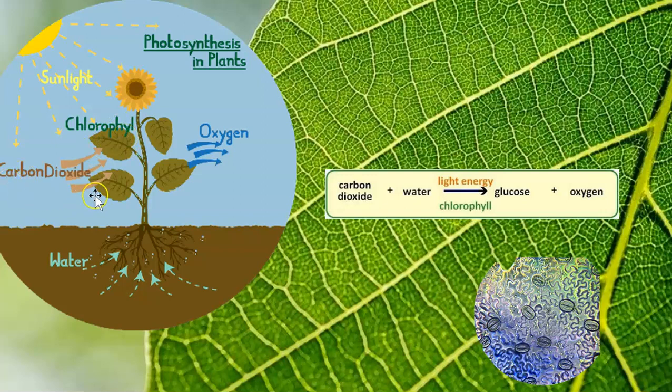It's taking in carbon dioxide through those special little openings in its leaves that we can't see without a microscope. Remember, the stomata, there they are. So it takes in that carbon dioxide.